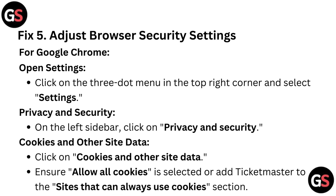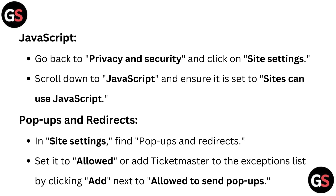Fix 5: Adjust browser security settings. For Google Chrome, open Settings by clicking the three-dot menu in the top right corner. Go to Privacy and Security on the left sidebar, then click on Cookies and Other Site Data. Ensure 'All Cookies' is selected or add Ticketmaster to the sites that can always use cookies. Go back to Privacy and Security, click on Site Settings, scroll down to JavaScript, and ensure it is set to 'Sites can use JavaScript.' In Site Settings, find Popups and Redirects and set it to Allowed, or add Ticketmaster to the Exceptions list by clicking Add next to Allowed to Send Popups.